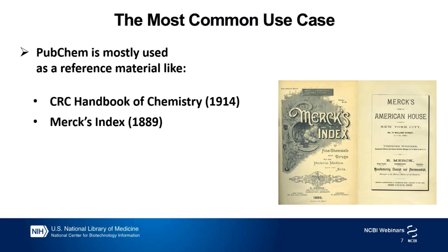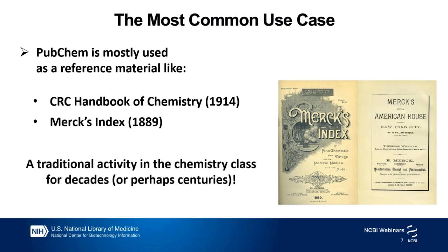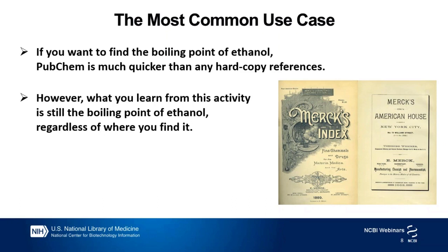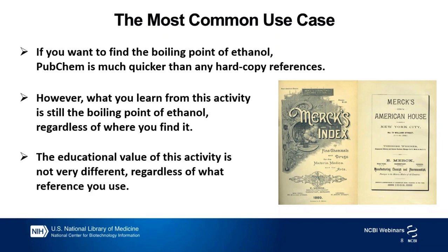Essentially, this has been a traditional activity in the chemistry classroom for decades or perhaps centuries. Let's suppose that you want to find some property of a chemical — let's say the boiling point of ethanol. You can find it from PubChem much quicker than from any hard copy references. But at the end of the day, what you learn from this activity is still the boiling point of ethanol regardless of where you find it.